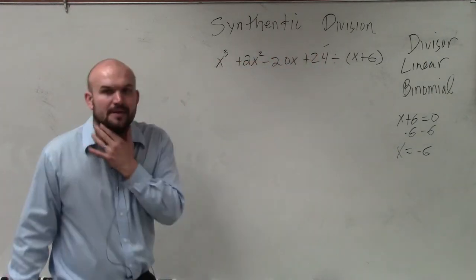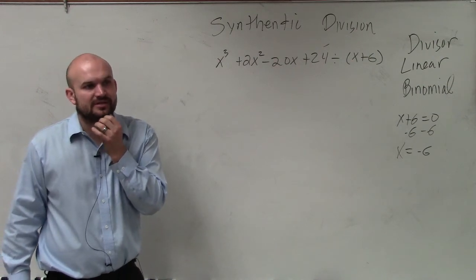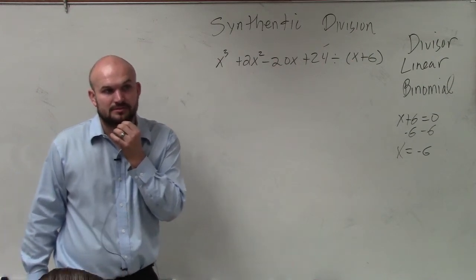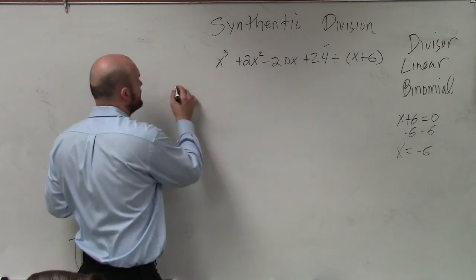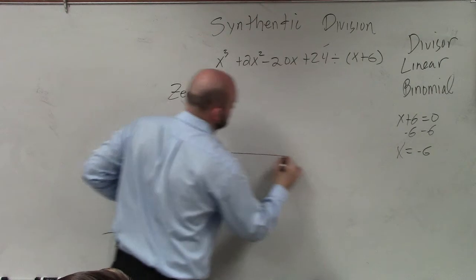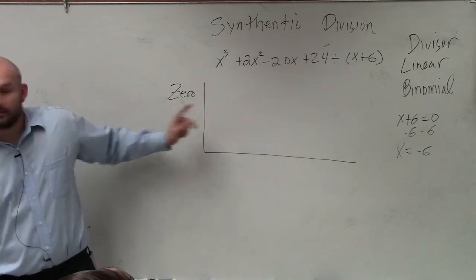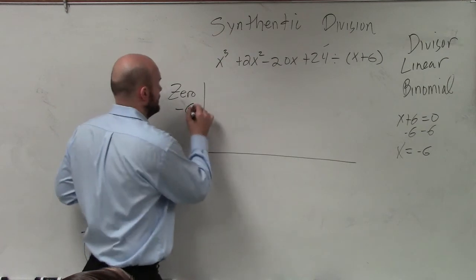So, the way that we set up synthetic division, Gavin, you ready for this? Okay. So, what we do is, we take out our zero. So, our zero that we found for this problem is? Negative six. Negative six.